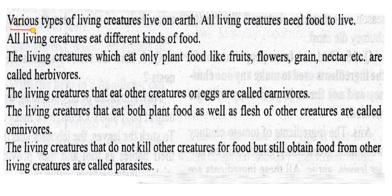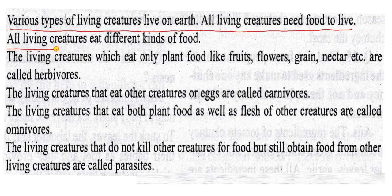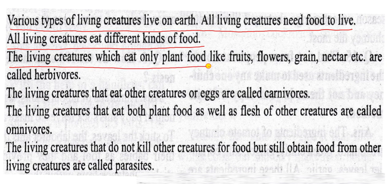Various types of living creatures live on Earth. All living creatures need food to survive. All living creatures eat different kinds of food. The living creatures which eat only plant food — like roots, flour, grain, nectar, etc. — are called herbivores.